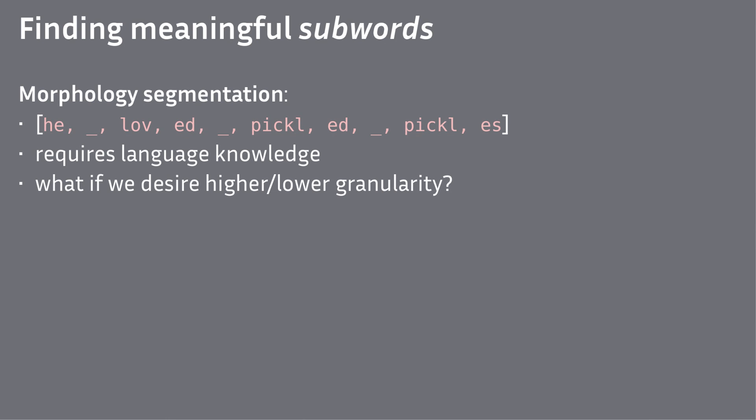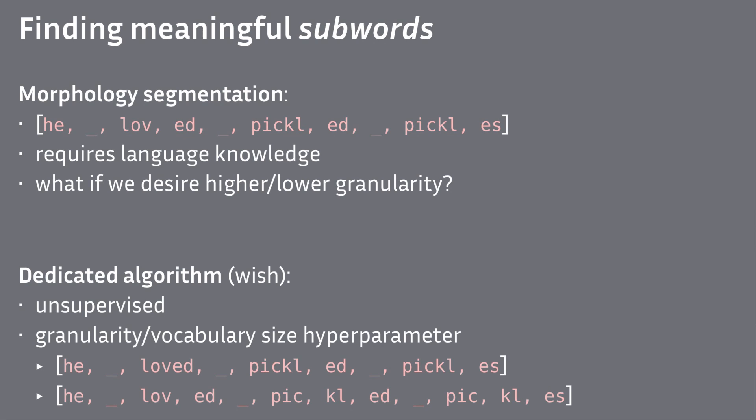Also, this way we cannot control the granularity of the units. What we want instead is something unsupervised and something where we can turn a knob to make the segmentation more or less aggressive, resulting in shorter or longer sequences as we desire. It turns out there is such a thing, and it's called byte-pair encoding.